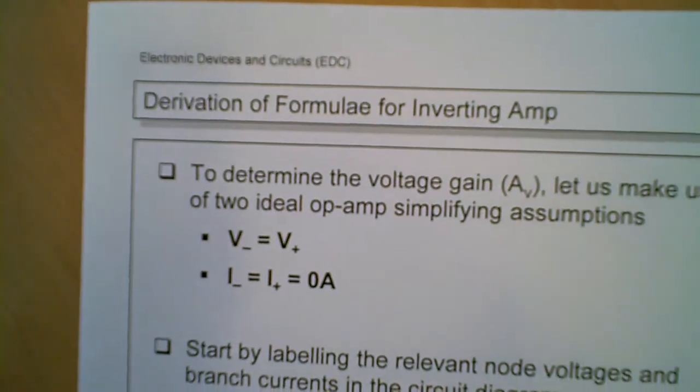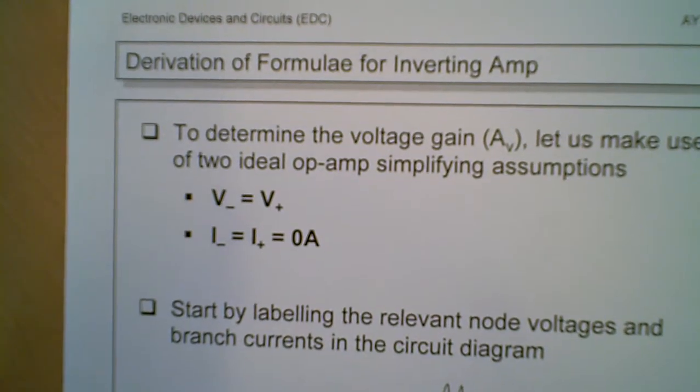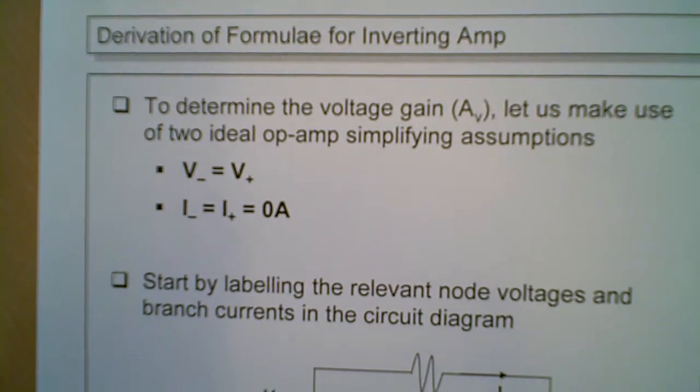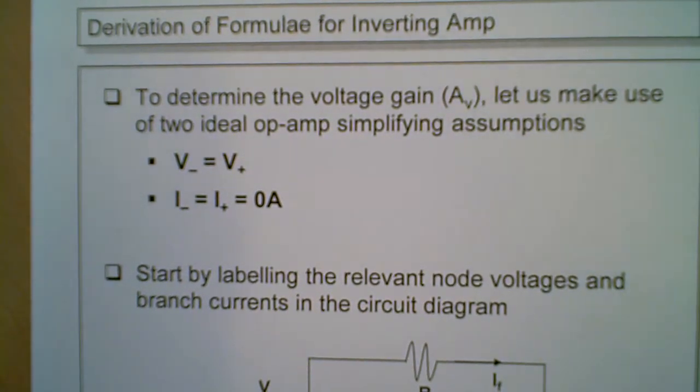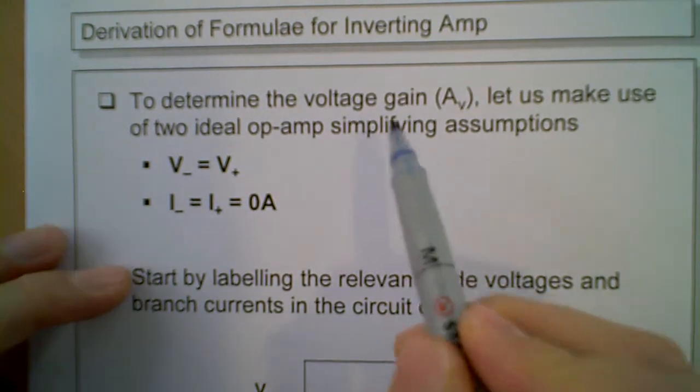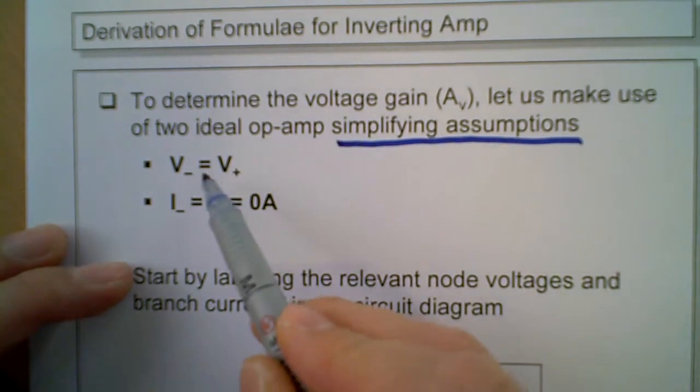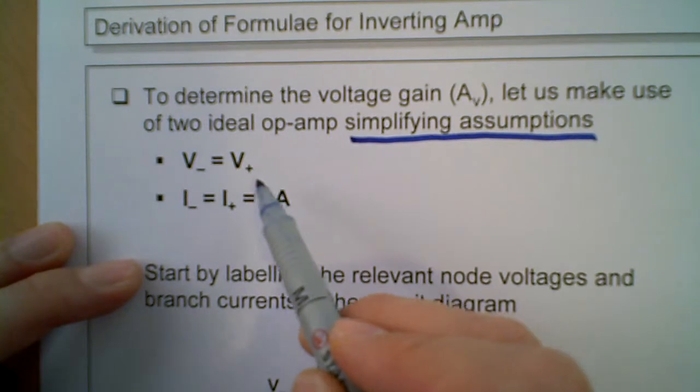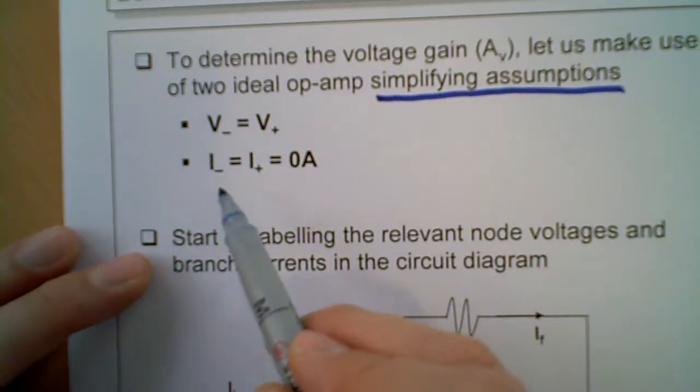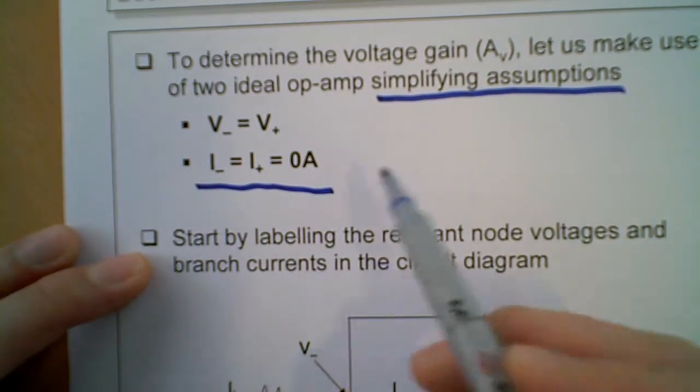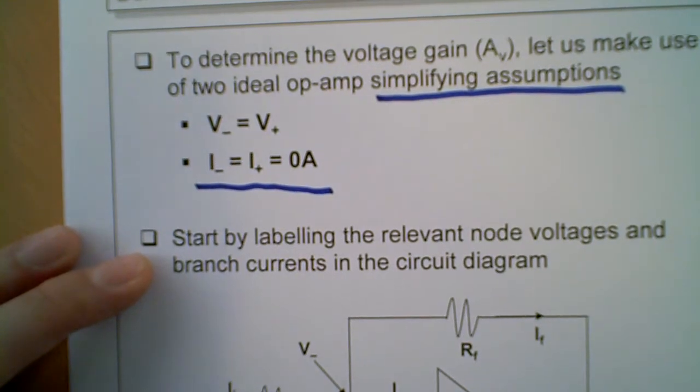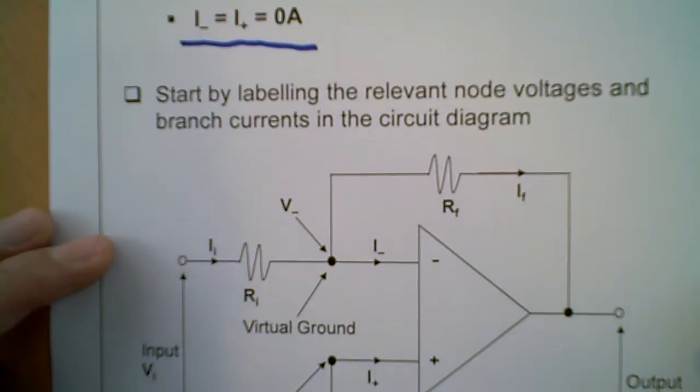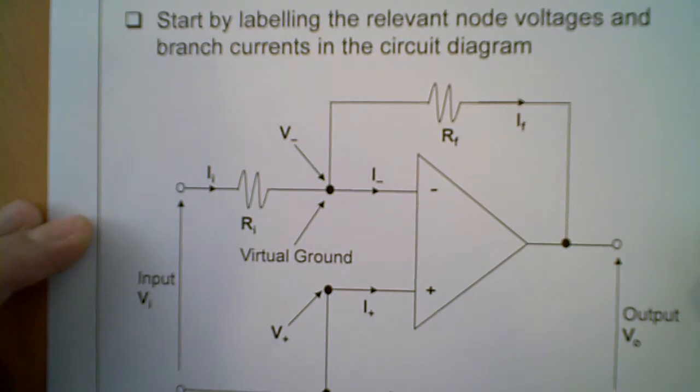This is the derivation of the formula for the inverting amplifier, and it may be found on page 20 of your lecture notes. To first of all begin to determine the voltage gain, let's make two assumptions, simplifying assumptions. That the V minus equals to V plus, and there's no current entering into the terminal because of the very high input impedance.